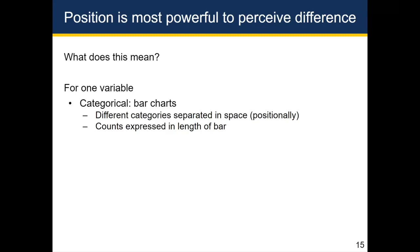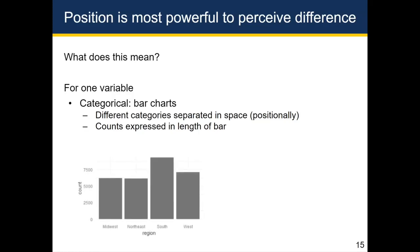For a single categorical variable, bar charts are the most effective way of communicating this information. Looking at the number of people who live in each region of the U.S., you can see that the most people live in the South compared to the other three regions. The different categories are separated positionally, and the counts are expressed in length. We could have separated the bars using color, but since the count is a number, even though region is a categorical variable, we use a bar chart to illustrate the difference in counts.